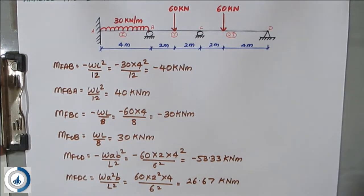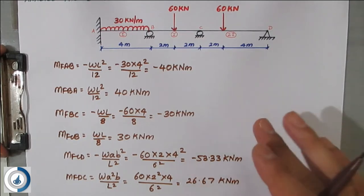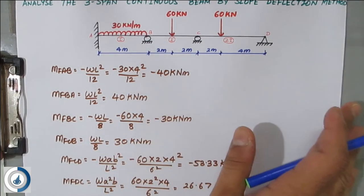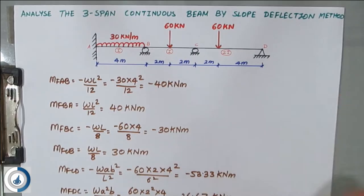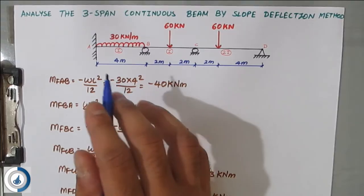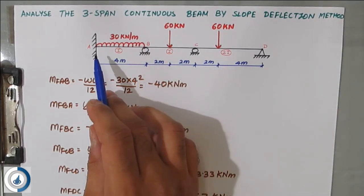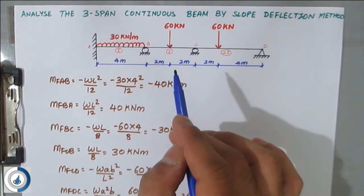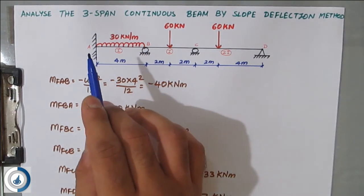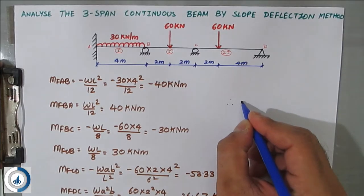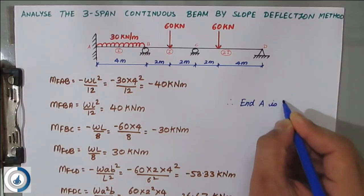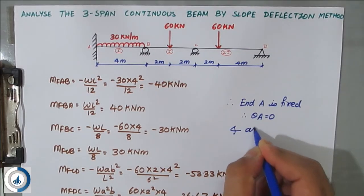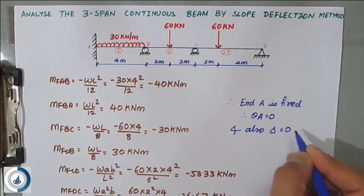This completes the first step of finding the fixed end moments. Now you have to check where theta equals zero. Sinking is not given, so delta = 0. End A is fixed, while B and C are rollers and D is a hinge. Therefore theta_A = 0 and delta = 0.